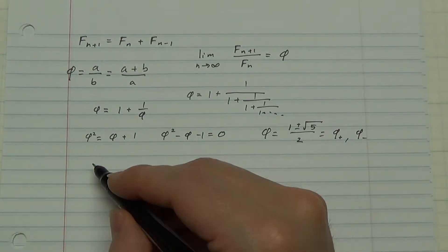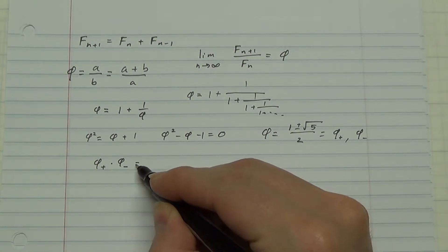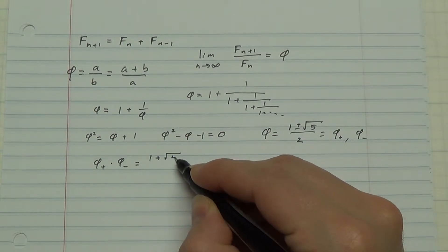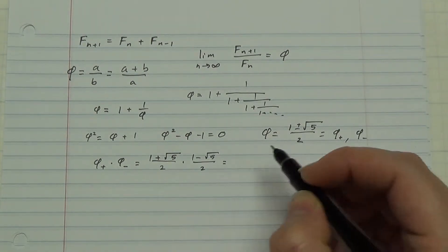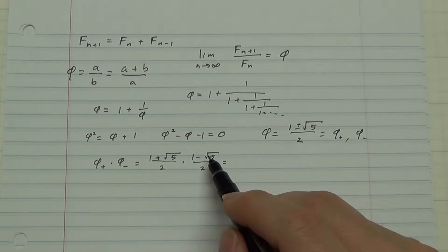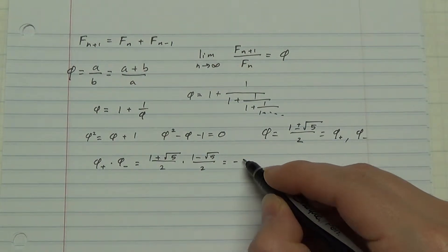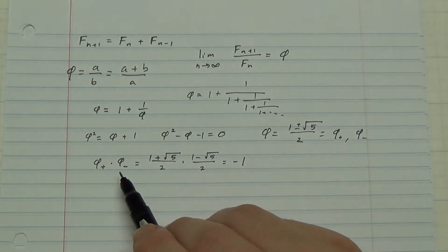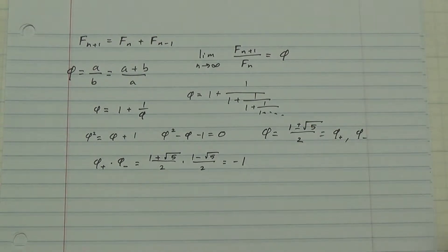Let me point out something very interesting. Phi plus times phi minus, 1 plus root 5 over 2 times 1 minus root 5 over 2. The root 5 terms cancel, giving 1 minus 5 is negative 4 over 4, which is negative 1. So phi plus and phi minus are negative reciprocals of each other. That will be useful later.